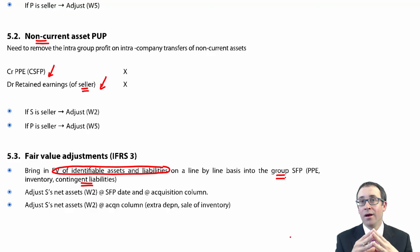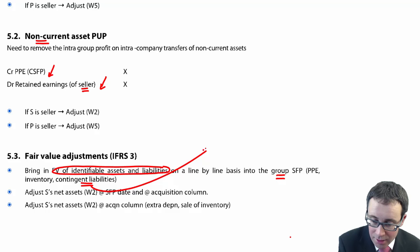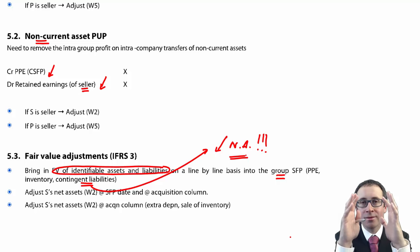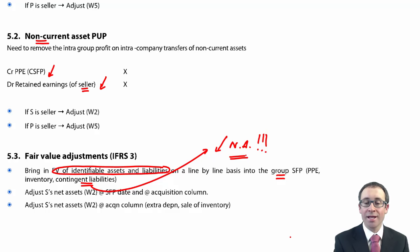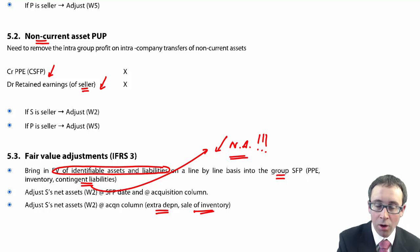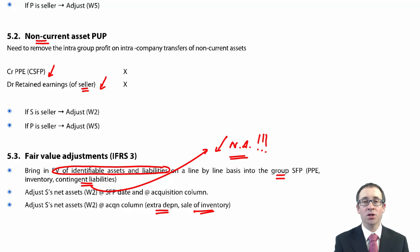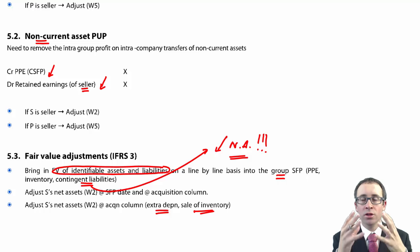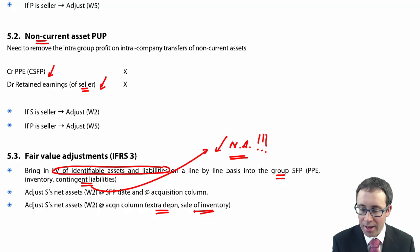Just be careful — a contingent liability reduces the net assets, so show it in brackets in the net assets calculation, similar to your additional depreciation adjustment. If anything changes — extra depreciation, or fair value adjustment inventory has been sold — make sure you update S's net assets at the acquisition column accordingly. The key one is PPE with extra depreciation, but be aware of the contingent liability treatment difference between group accounts and individual subsidiary accounts. It is a group account adjustment only.